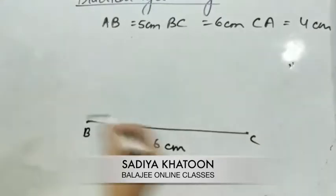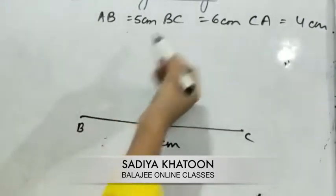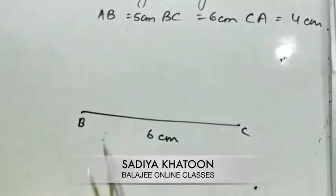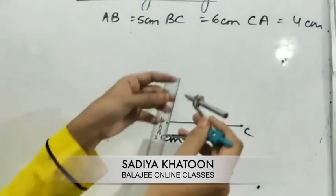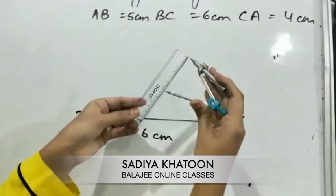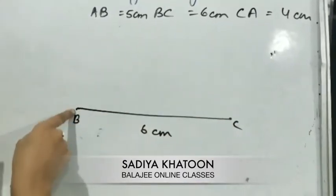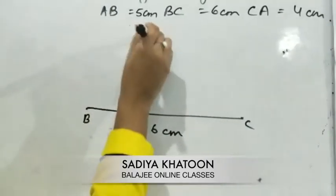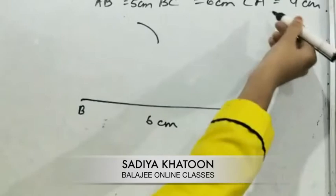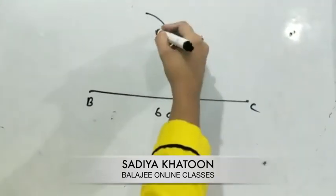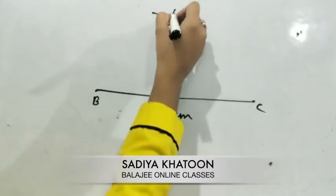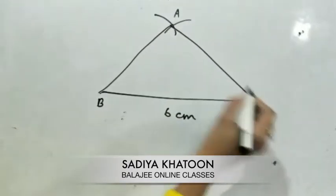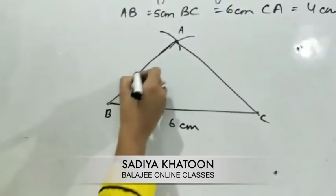After drawing the base BC, point A is above at 5 cm from B. So you take the compass, measure 5 cm using the ruler, keep the compass needle on B, and put an arc at the top. Similarly, take 4 cm in the compass, keep the needle on C, and cut an arc. The intersection of both arcs is point A. Now join A to B and A to C with the ruler.